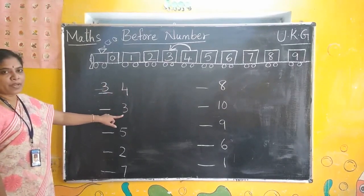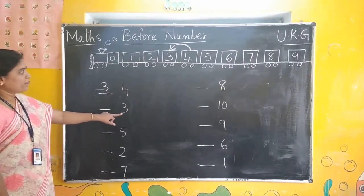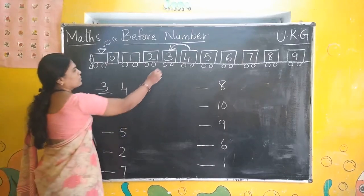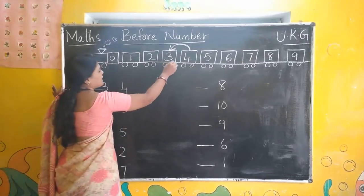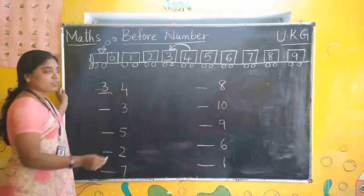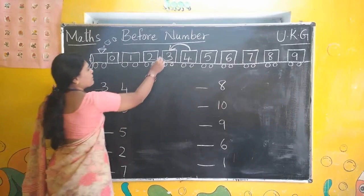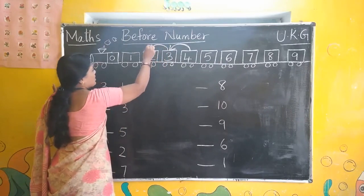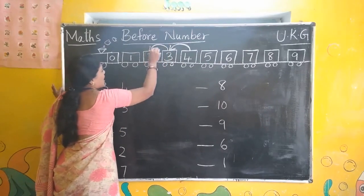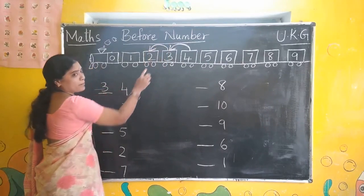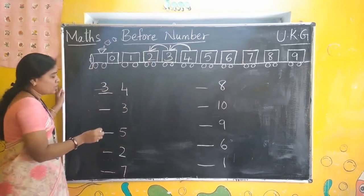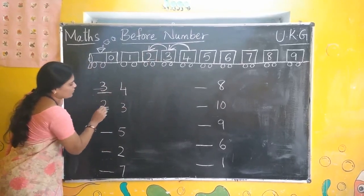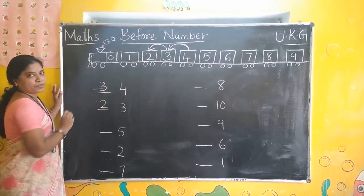Next. What is this number? 3. 3 is here. Now, before 3, what is the number? Draw an arrow like this. What is this number? 2. So, 2, 3.